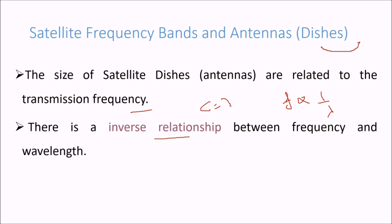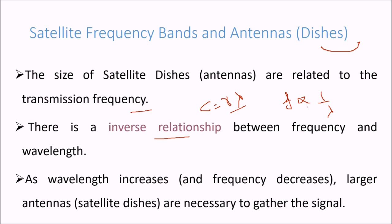We know c equals nu lambda. Frequency and wavelength are inversely proportional. So as wavelength increases, the frequency would decrease, and you need larger antennas. Large antennas are necessary to gather the signal. So the wavelength increases, the frequency decreases, you need larger satellite dishes.